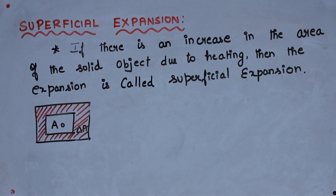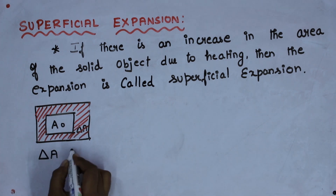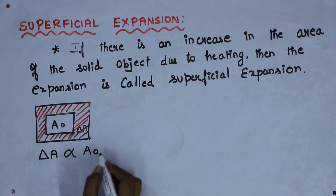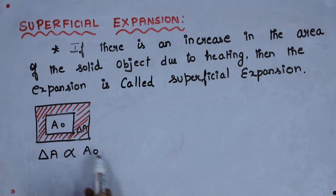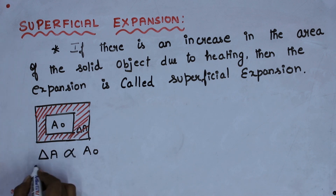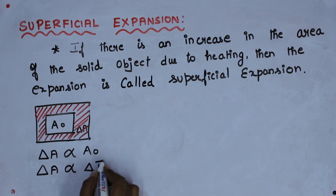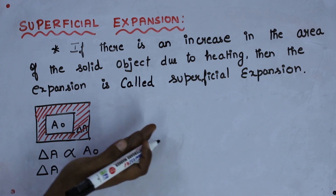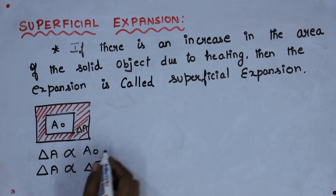We have a formula for superficial expansion. Change in area is proportional to the initial area — if area is more, the change in area will also be more; if it is less, delta A will also be less. Delta A is also proportional to the change in temperature. As with linear expansion, if temperature is more, the expansion in area will also be more. Both are proportional to each other.